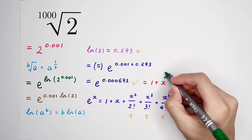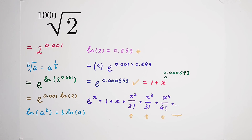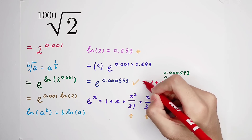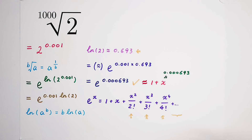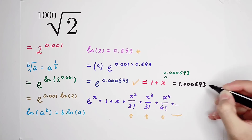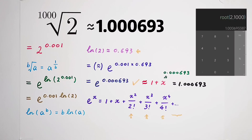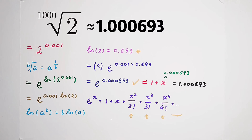We know x is 0.000693, so substituting gives us 1.000693. Press this on your calculator and it will confirm approximately 1.000693. So we are correct — the approximation was really great. Give a thumbs up for this wonderful trick, and we'll see you next time.